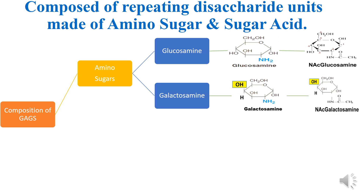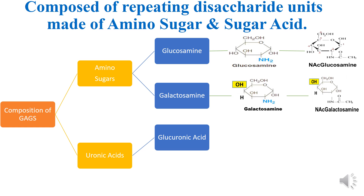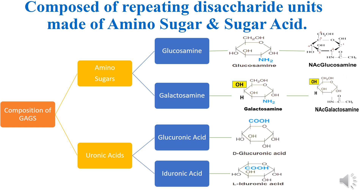When galactosamine is acetylated it is known as N-acetyl galactosamine. A GAG may have either of these amino sugars. The second unit of the repeating disaccharide is a uronic acid, which is again of two types: glucuronic acid or iduronic acid. These two are epimers of each other.